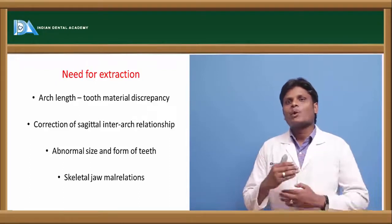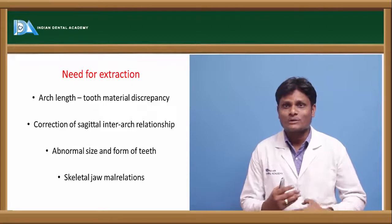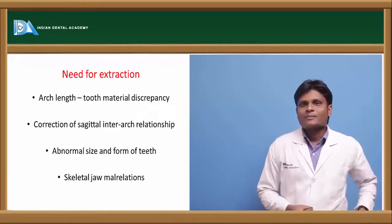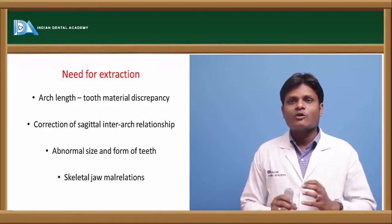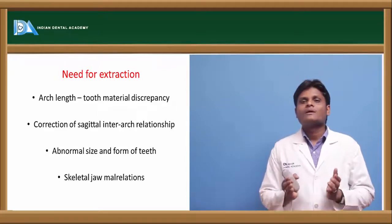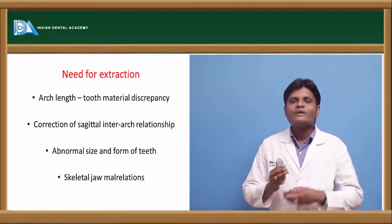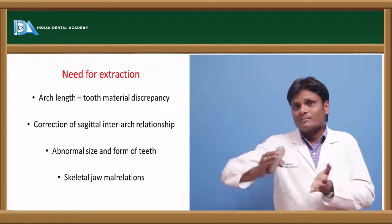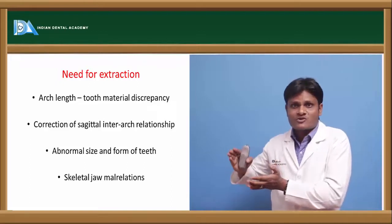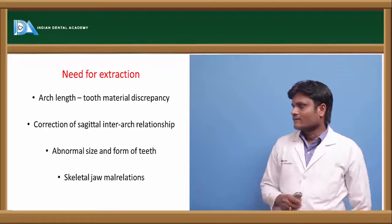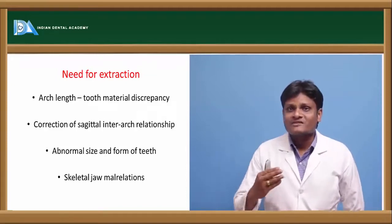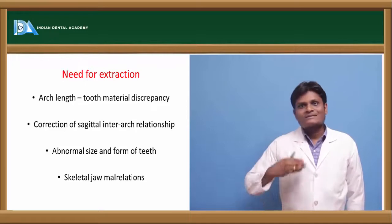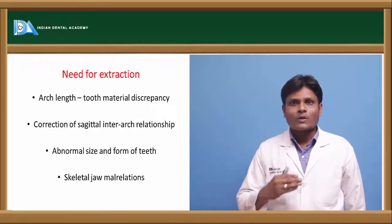Also, in order to correct molar relationship from Class 2 to Class 1 or Class 3 to Class 1, we need to go for extraction of few teeth selectively in the arch. When dental arches carry teeth of abnormal size, we need sufficient space to accommodate them — extracting teeth of least importance to provide space for alignment of abnormally positioned or sized teeth. Extractions may also facilitate skeletal corrections by surgical treatment. All these extractions which serve the purpose of treating a malocclusion are called therapeutic extractions.